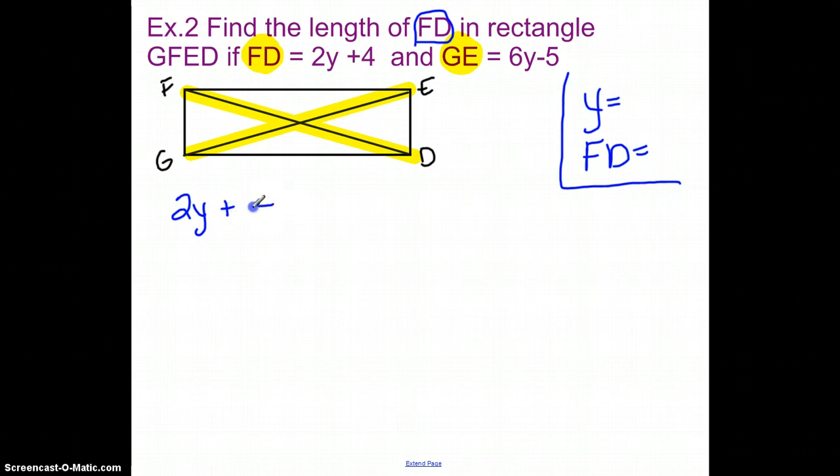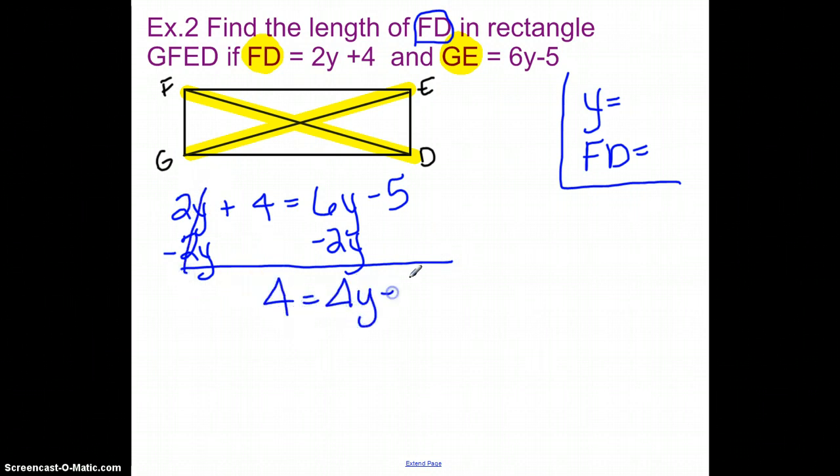So 2y plus 4 is going to have to equal 6y minus 5. So I'm going to subtract 2y.